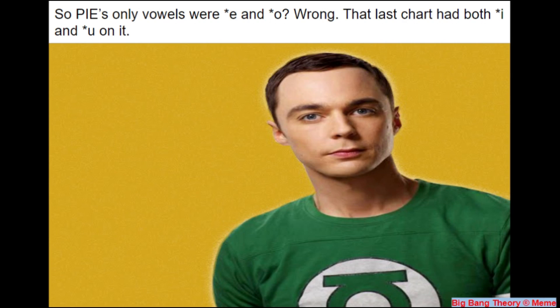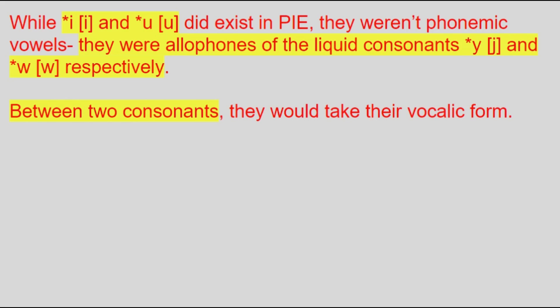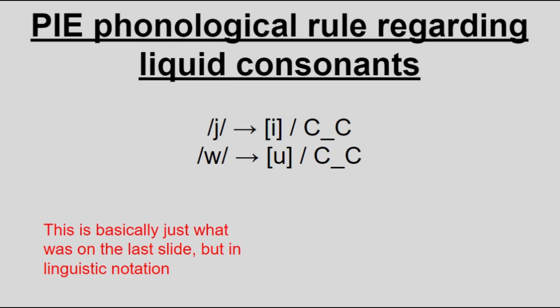But are those all the vowels in PIE? Well, yeah, kind of. Something important to understand is that PIE also had i and u vowels, but they weren't phonemic. They were allophones of the liquid consonants Y and W, respectively, that occurred when between consonants. And yes, this was a true allophone in actual PIE, unlike ablaut itself.